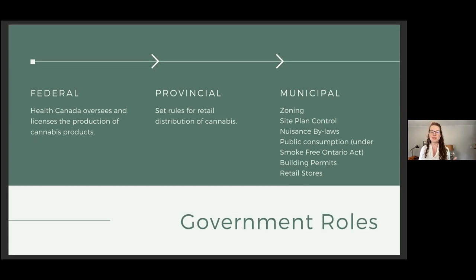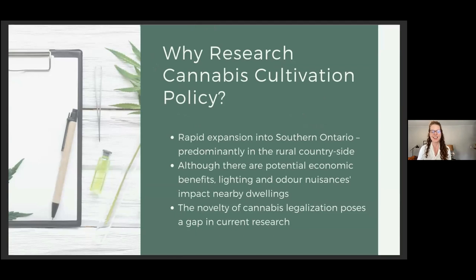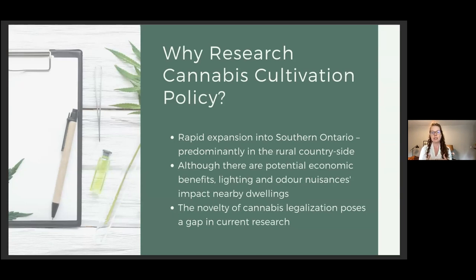With the federal legalization of cannabis, production has expanded significantly across southern Ontario, and much of this expansion has occurred in the rural countryside, often through using existing greenhouse infrastructure. While the growth of the sector provides economic benefits to rural communities, complaints from adjacent residents — mostly related to lighting and odor issues — are common, and mitigation of these issues is complex and often challenging. Municipalities attempting to navigate this complexity have used various planning measures, even temporarily halting new operations, resulting in bylaws and approaches that lack consistency and may not be fair to producers or neighboring landowners, and the appropriateness of these policies has not been tested.